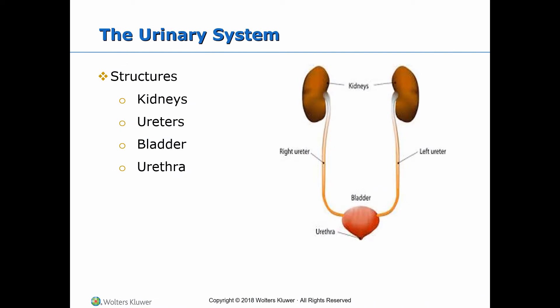The kidneys and the urinary system include the kidneys, ureters, bladder, and the urethra. The kidneys are a pair of bean-shaped structures located retroperitoneally — that is, behind and outside the peritoneal cavity — on the posterior wall of the abdomen. The right kidney is slightly lower than the left due to the location of the liver. Kidneys are not usually palpable unless there is distention, which is abnormal. Deep palpation is not part of the nursing assessment.